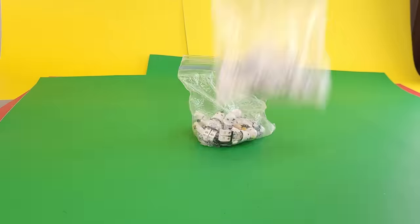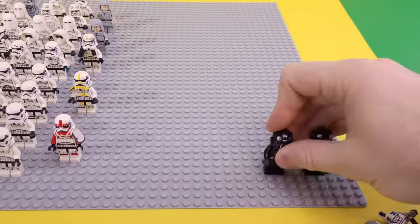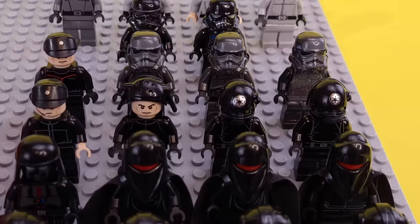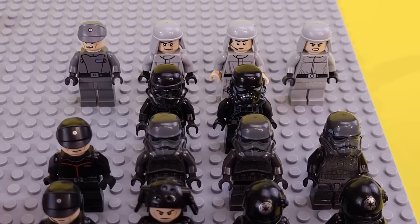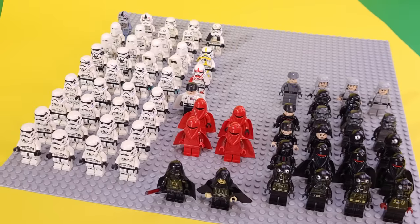So I took all of my Imperial minifigures, which were just thrown randomly into this bin, and started setting them up on this base plate. The Stormtroopers are in one section, with all of the other factions in their own areas, like all of the dark troopers being over here. And of course we have the Emperor and Darth Vader leading them at the front. And this definitely looks way nicer.